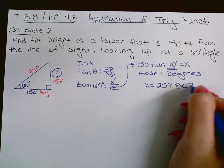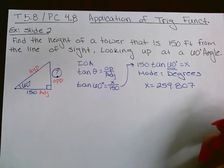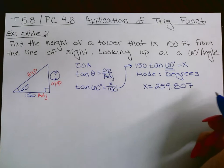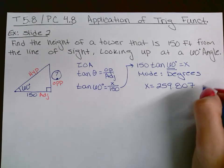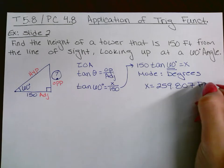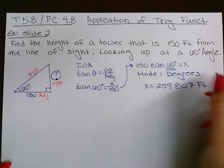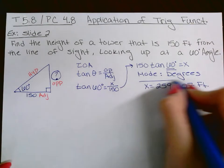In your calculator, in degree mode: 150 times tangent of 60 gives 259.807 feet. That's your answer for the height of the tower.